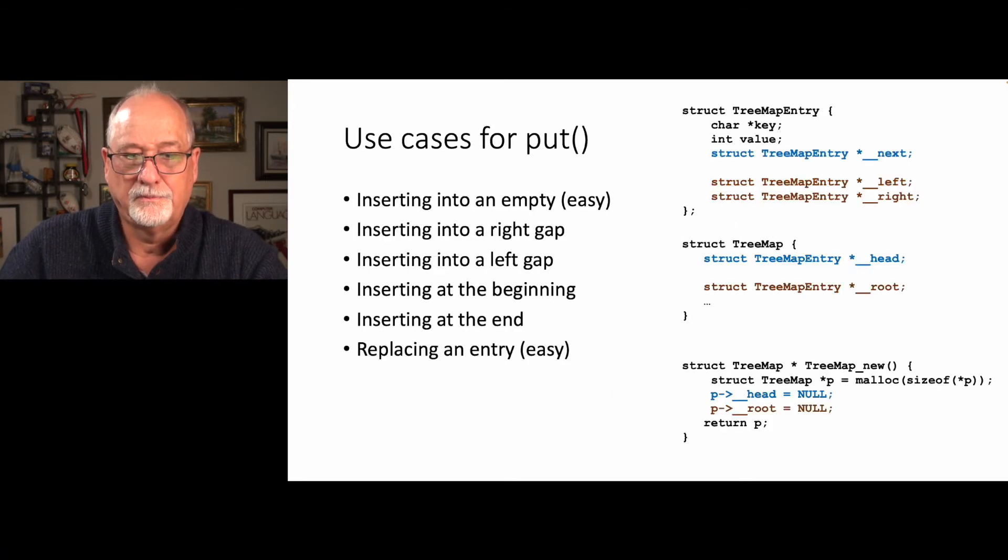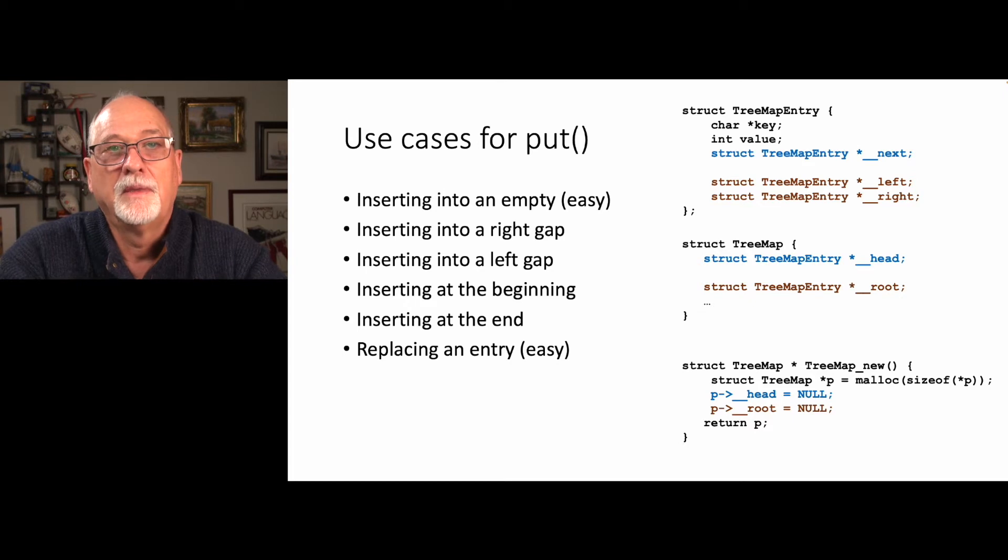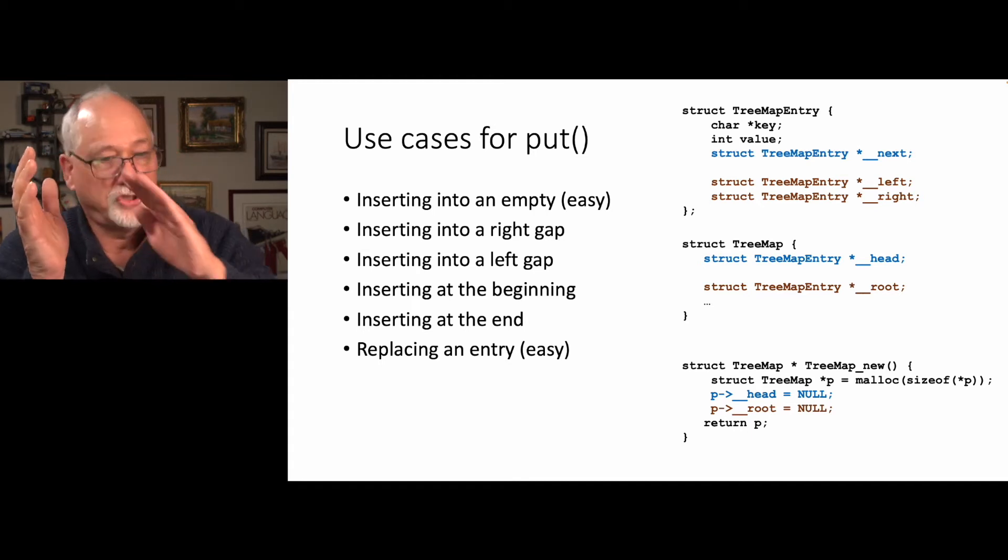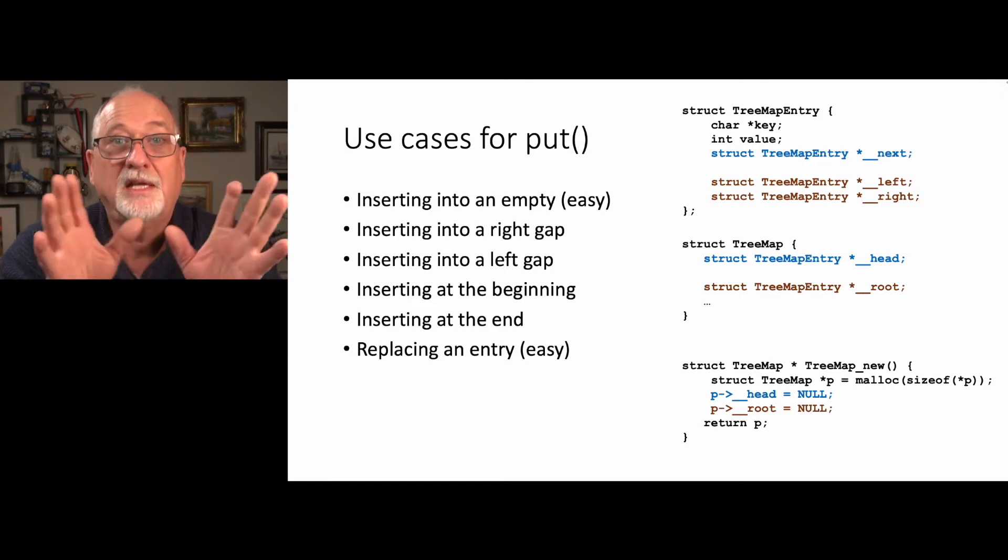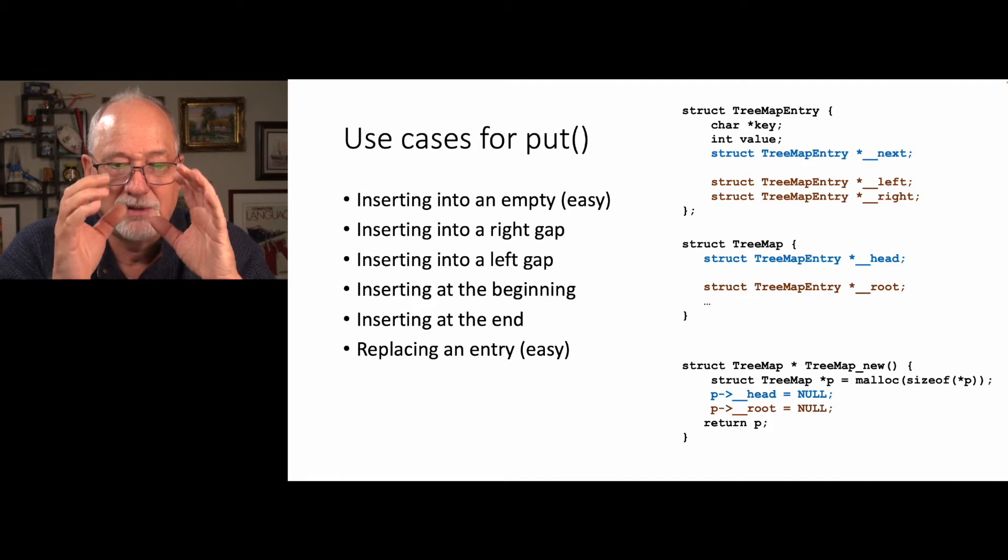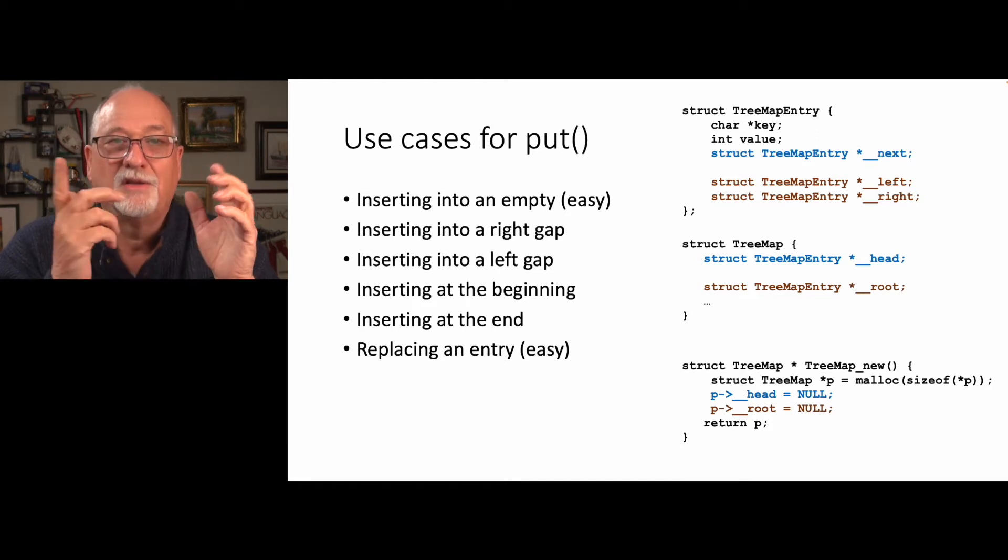We are going to have to be real careful to keep in our mind - and this is where I drew all those pictures. We've got to be able to insert into an empty list, which is easy because root is null and you just put the thing in. Then you've got to find a right gap, a gap to the right of something, then find a left gap, then insert at the beginning after you go down a bunch of lefts and go down a bunch of rights. And then replacing is the easy part. As we've seen in put, if it's equal, change the value.